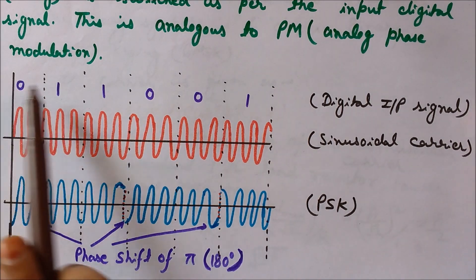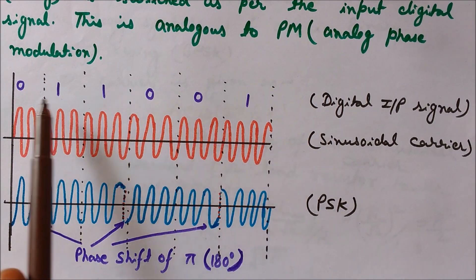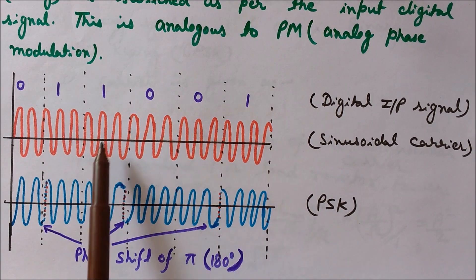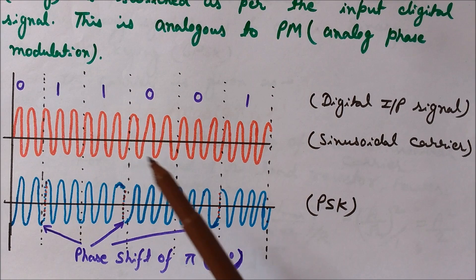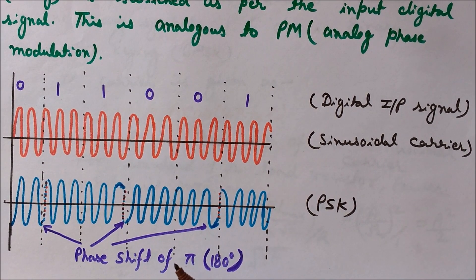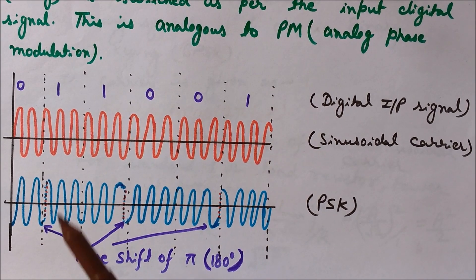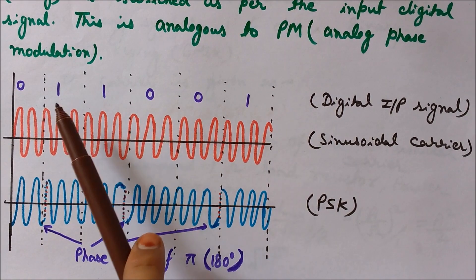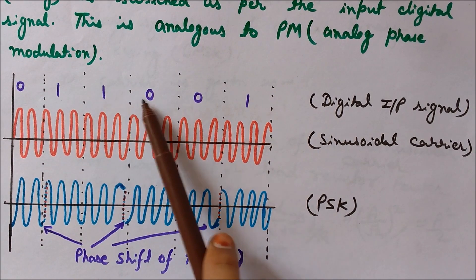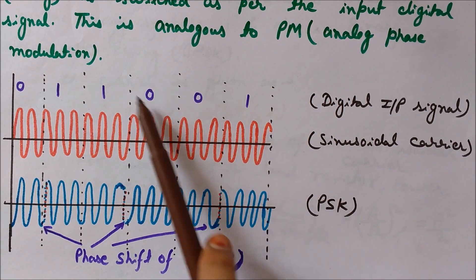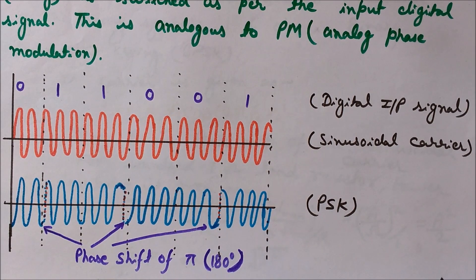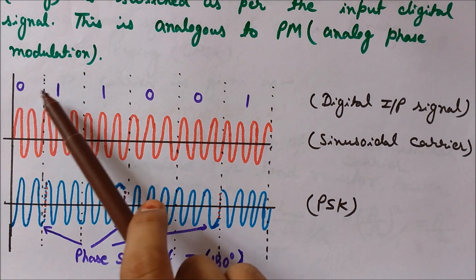In phase modulation, the digital input signal is in the form of binary inputs 0 1 1 0 0 1, and the carrier wave is a continuous sinusoidal analog form having constant amplitude and constant frequency. Observe that it changes the phase only when there is a change in the binary symbol — whenever the binary symbol changes either from 0 to 1 or from 1 to 0. There is no change at points where 0 follows 0 or 1 follows 1. Only when there is a change in the binary symbol does the phase of the carrier wave see a shift of pi, that is 180 degrees.